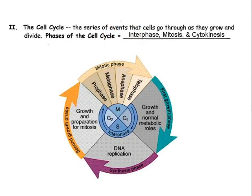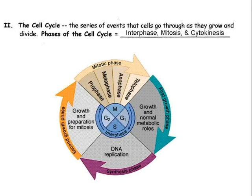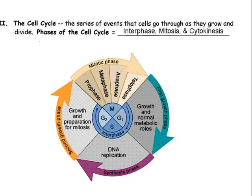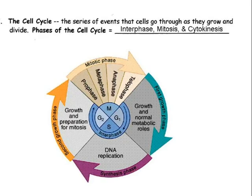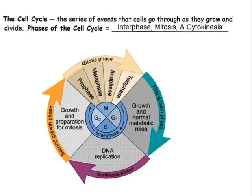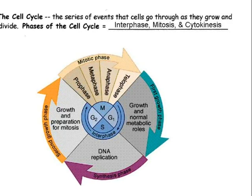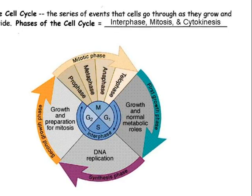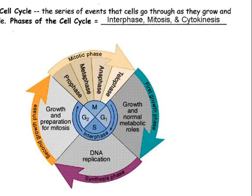Now that we have looked at chromosomes and understand their structure, let's begin to look at what happens in the cell to ensure that each new cell receives an exact copy of the DNA. Every cell in your body has one thing in common — they are descendants of the zygote, the first cell that was formed from the fusion of the egg and sperm that created you. Every cell in your body has passed through the cell cycle. The cell cycle is the series of events that cells go through as they grow and develop.